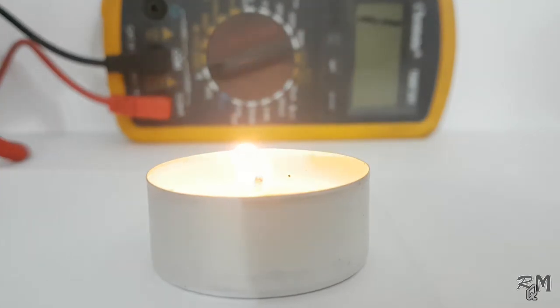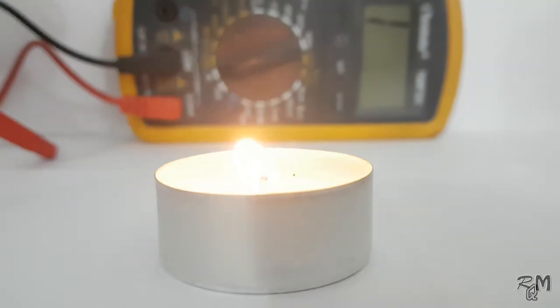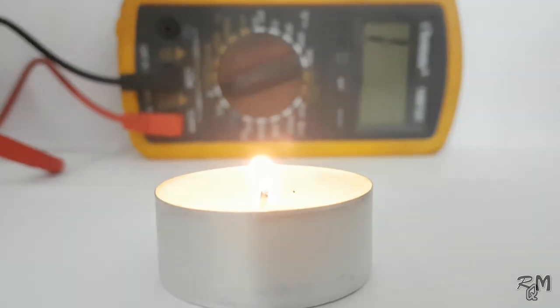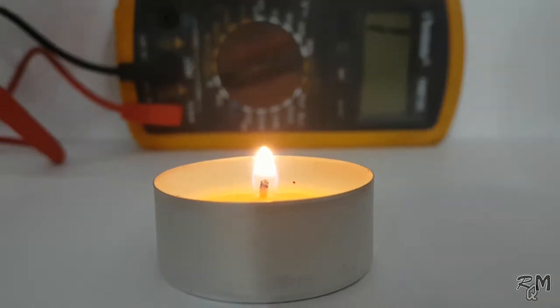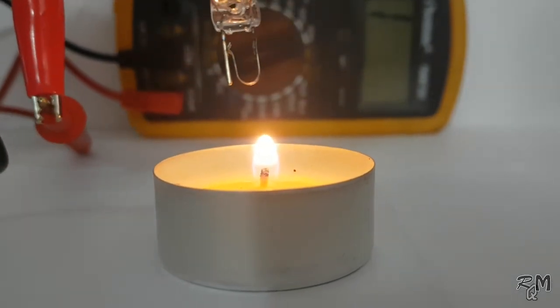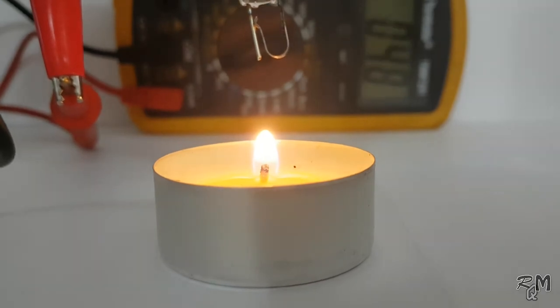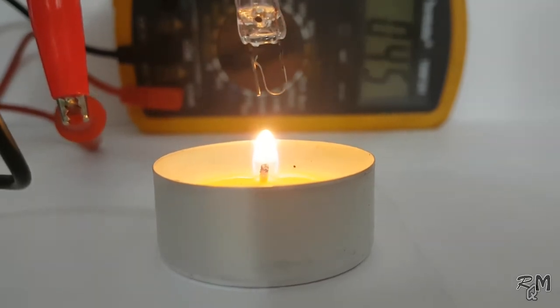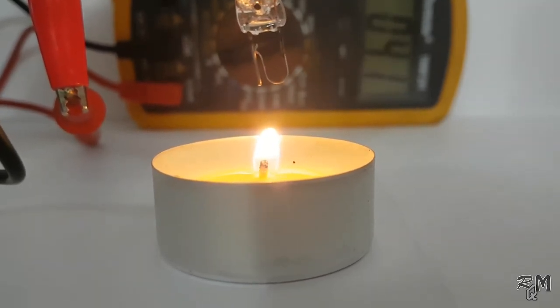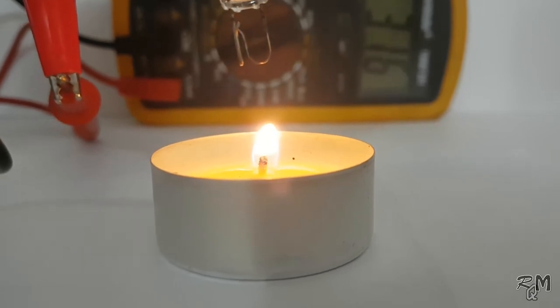See one more time carefully. Currently the multimeter is showing infinite resistance and the bi-metallic contact is open. As I bring the bi-metallic contact near to the flame, it starts to expand and gets short with the second electrode. You can hear the beep sound and observe resistance decrease to a low value.